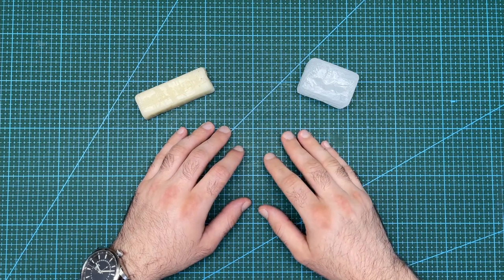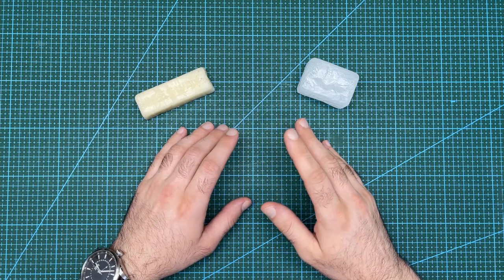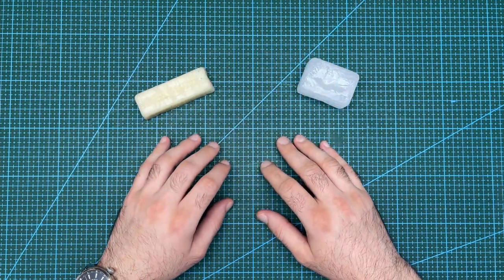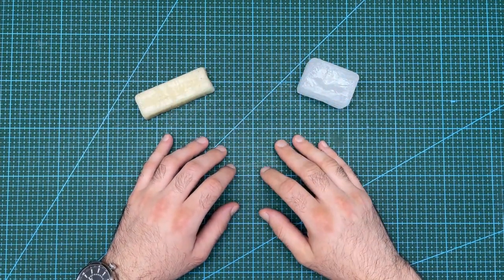In front of me I have the two types of wax used for leather, which are beeswax and paraffin wax. Each have different properties that make them useful for finishing edges.